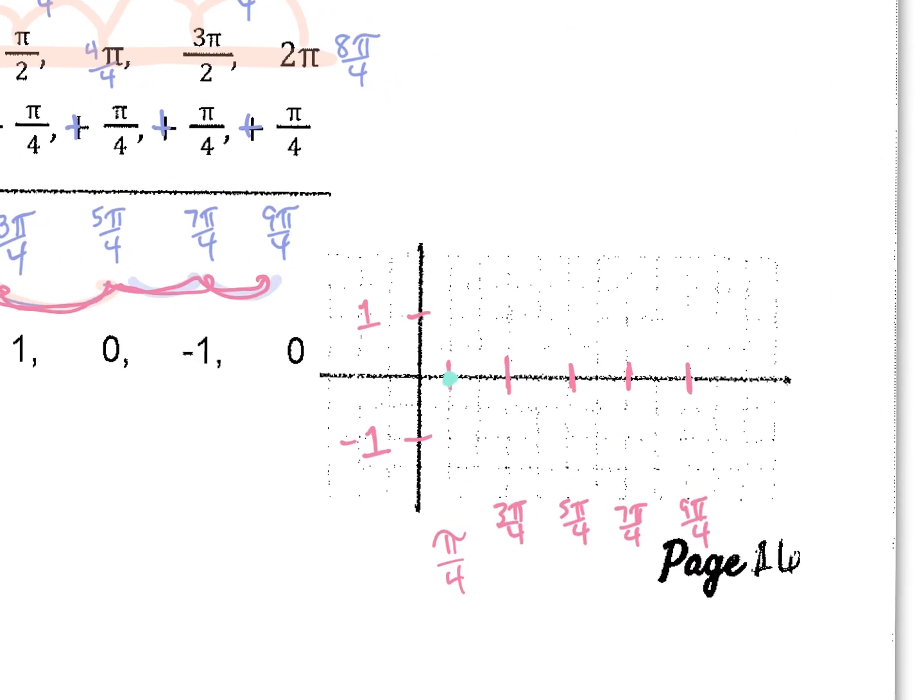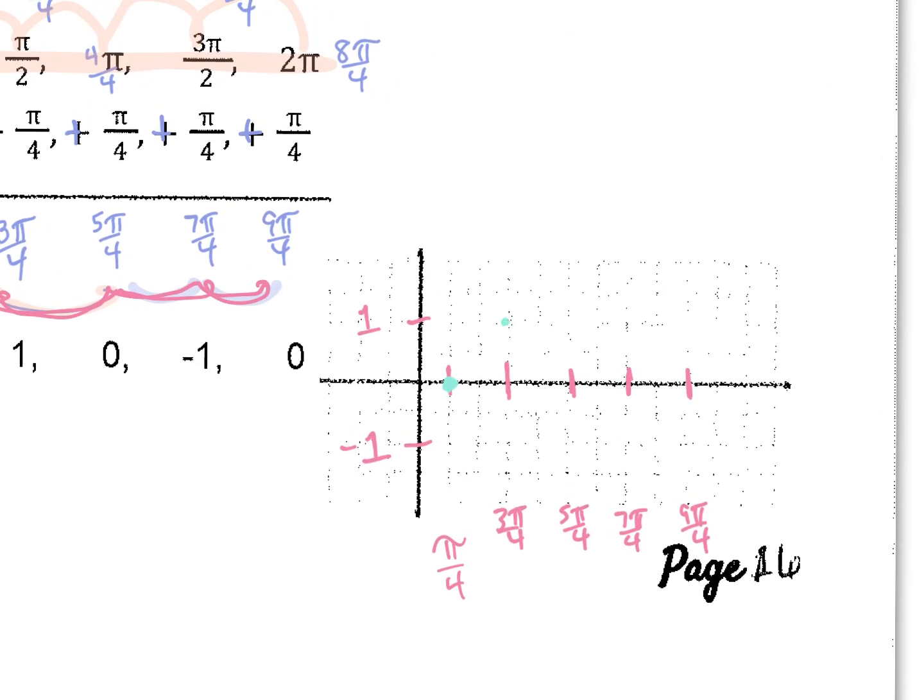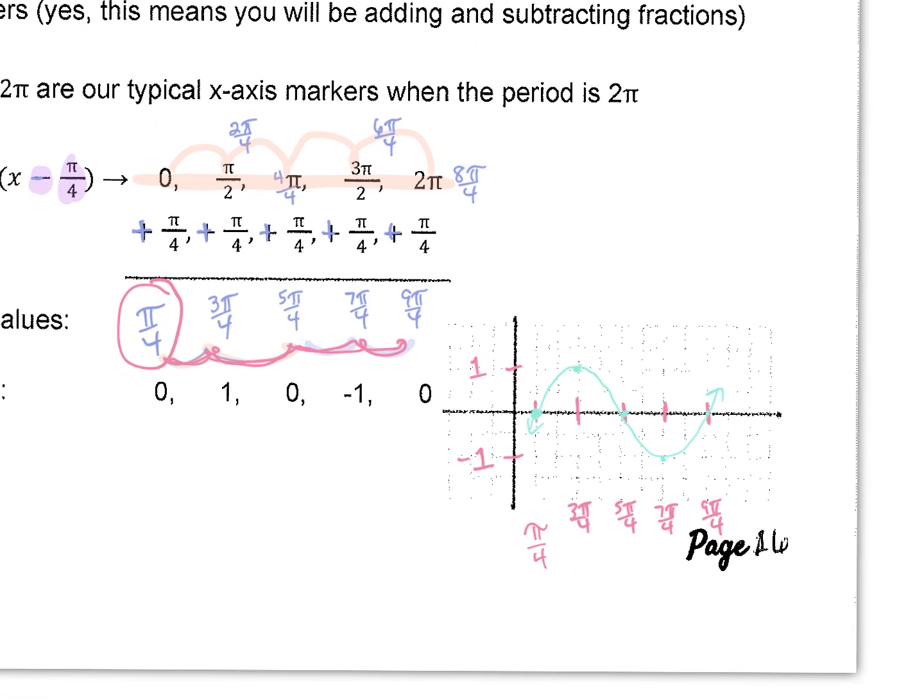So pi over 4, we're at 0. At 3 pi over 4, we're up at 1. And then 0, and then negative 1 and 0. So still that basic sine curve, but it's shifted to the right one unit, basically, one pi over 4 unit. So this consistent spacing of that 2 pi over 4, you've got to consider that.